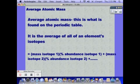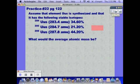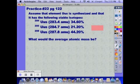Alright, let's see an example. So here we're given three masses. They gave us the rounded weight, but we're going to use the more specific one if they give it to us. So we have 283.4 times 34.6. But again, we need to use the decimal, so divide by 100.